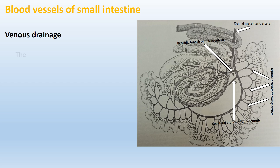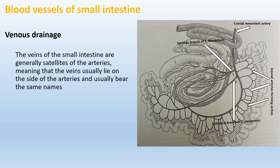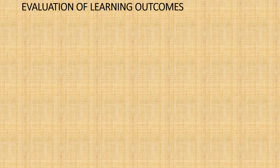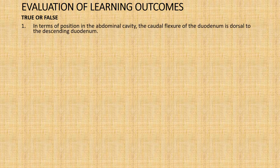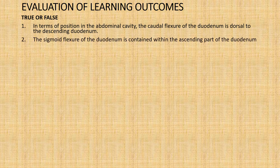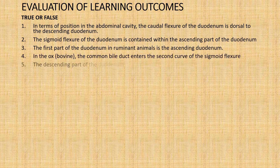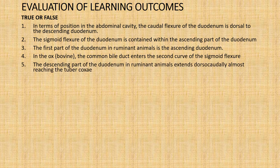In terms of venous drainage, the veins of the small intestine are generally satellites of the arteries — they lie alongside the arteries and bear the same names. This section is where you can evaluate yourself by answering questions based on the learning outcomes of this tutorial video. Thank you very much.